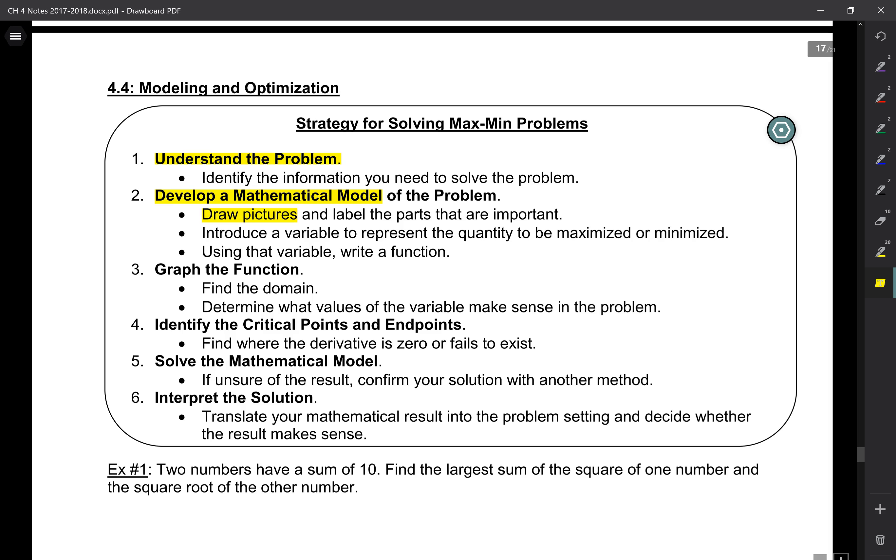How does that happen? You could draw pictures. Introduce a variable. Now, it's very important that when you work with these optimization problems, you are only working with one variable. So, what's an optimization problem? Optimization means like, what is the biggest box you can make out of this? What is the largest number that fits these requirements? So, maximum or minimum?